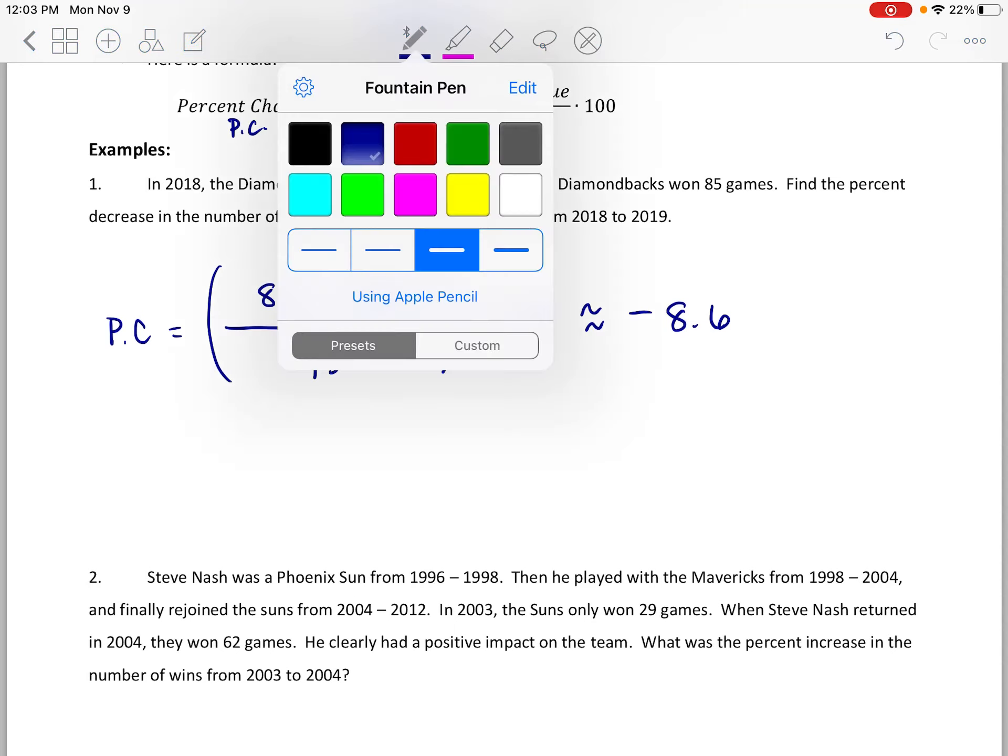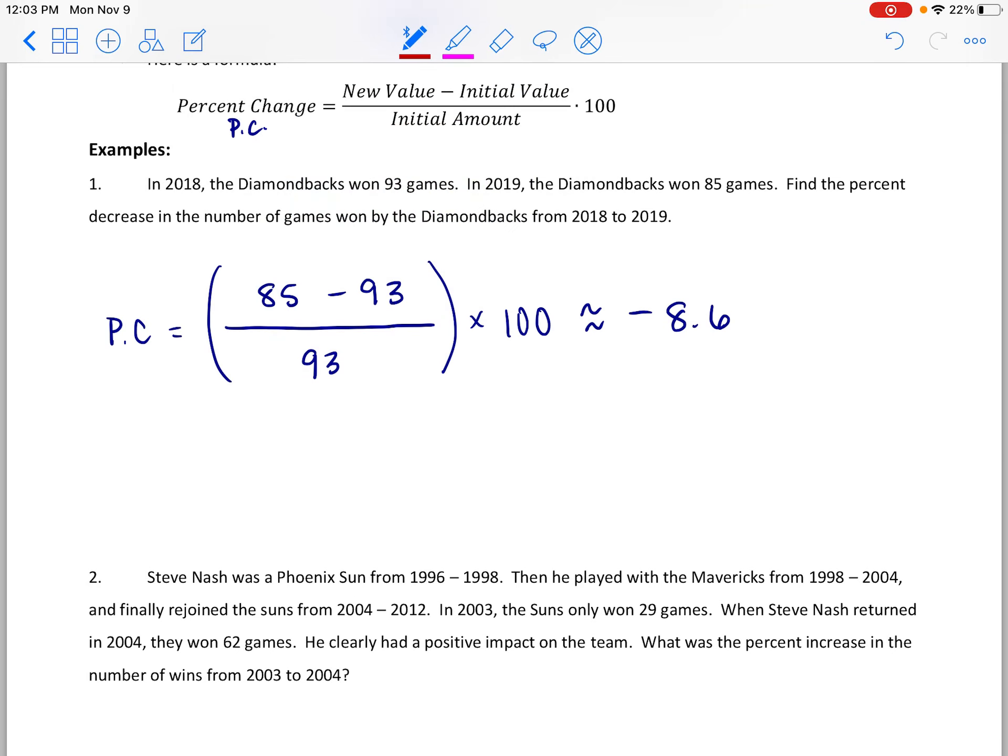So a negative 8.6, I rounded that off. You can say two things here, you could answer this two ways. You could say there was a negative 8.6 percent change, or you can say there was an 8.6 percent decrease. What you don't want to do is use the negative and the word decrease in the same sentence, because the negative and the word decrease would be like a double negative. So you can say there's a negative 8.6 percent change, which means there is an 8.6 percent decrease in the number of wins.